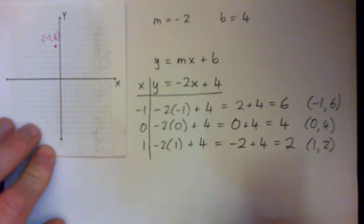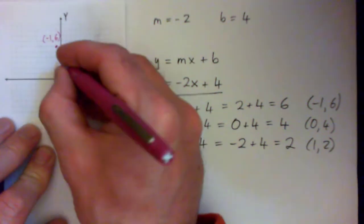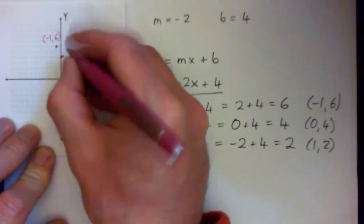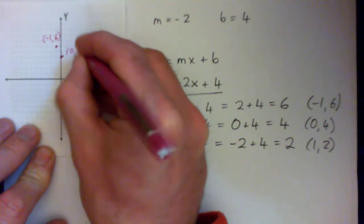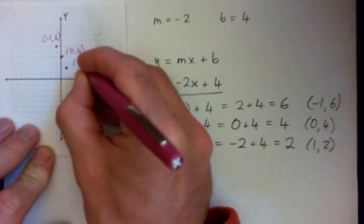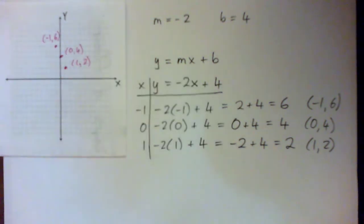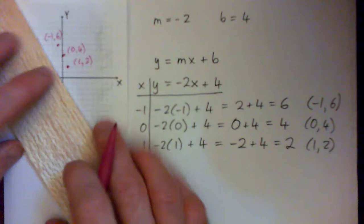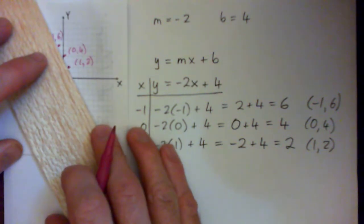All right. Good. So I'll just go over it real quick. So, 0, 4 is here. That's 0, 4. And I have 1, 2, x is 1, y is 2. That's there. X is 1, y is 2. That's there. And we can draw a line through these points.